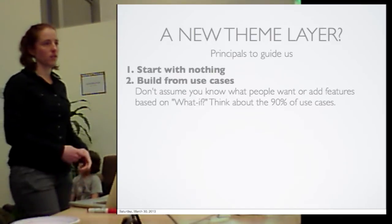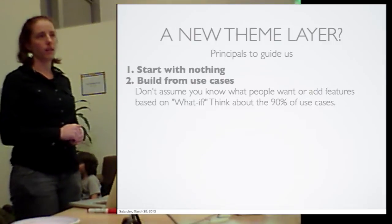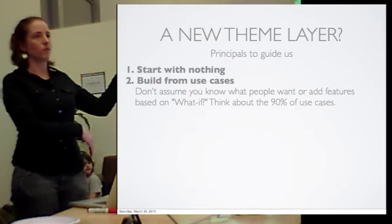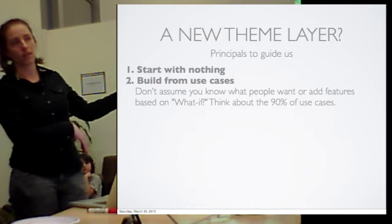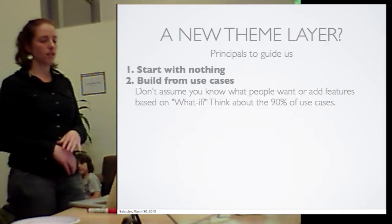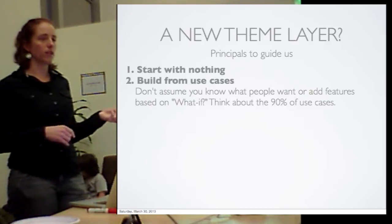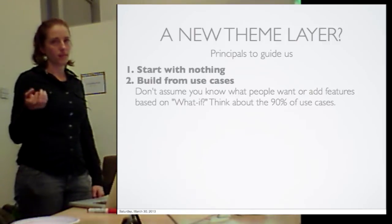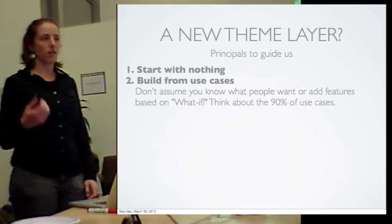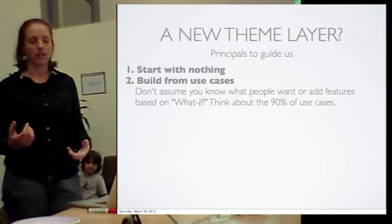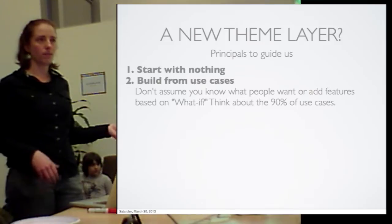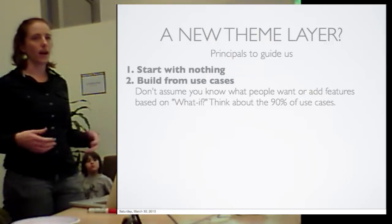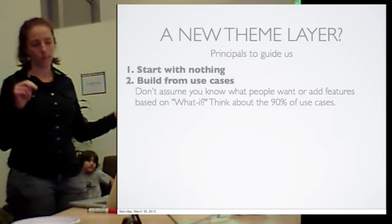We also want to build from use cases. There's a lot of stuff in Drupal right now where developers write all this crazy abstract code just in case someone ever wants to do it. For example, no one is ever going to override every single anchor tag on their entire website — so why do we have a theme link function that allows that? It creates a lot of overhead and it's really messy. We're going to make sure all new tools are actually there to solve real problems, not what-if problems.